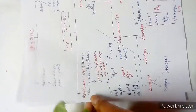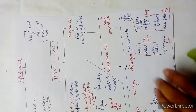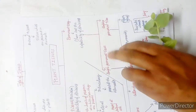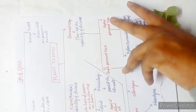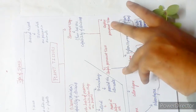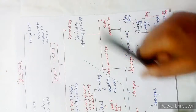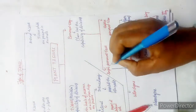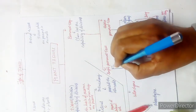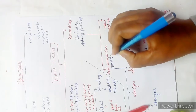Permanent tissues are divided into two sub-parts: simple permanent tissues and complex permanent tissues. Simple means they are made up of a single type of cell — a group of one type of cell forms simple permanent tissue.